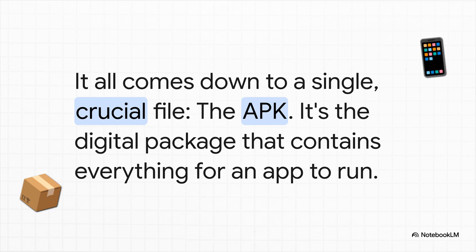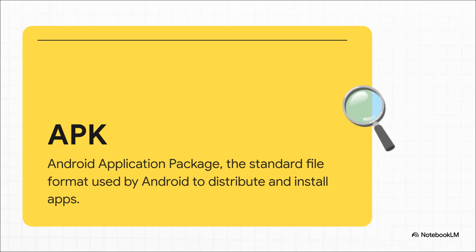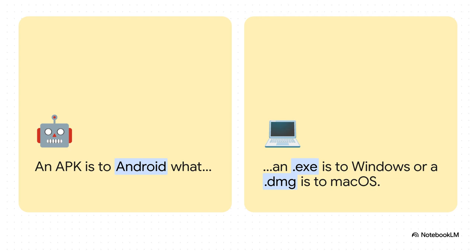Just think of it like a digital shipping container that holds every single piece of that app you want. APK stands for Android Application Package. It's the standard format, the one and only container that the Android operating system uses to manage the distribution and installation of every single mobile app. If you've ever installed a program on a Windows computer, you've double-clicked an .exe file. On a Mac, you've used a .dmg file. Well, the APK is the exact same concept but for the Android world — it's the master key that gets the app onto your device.